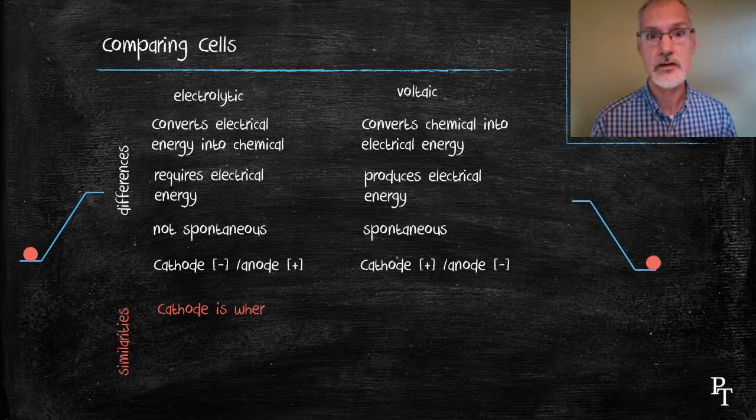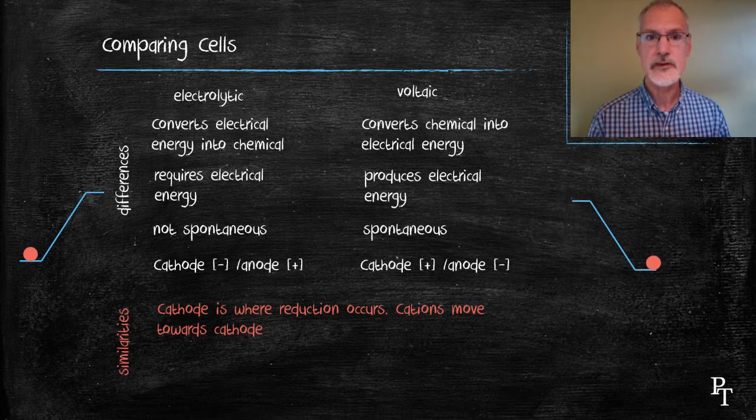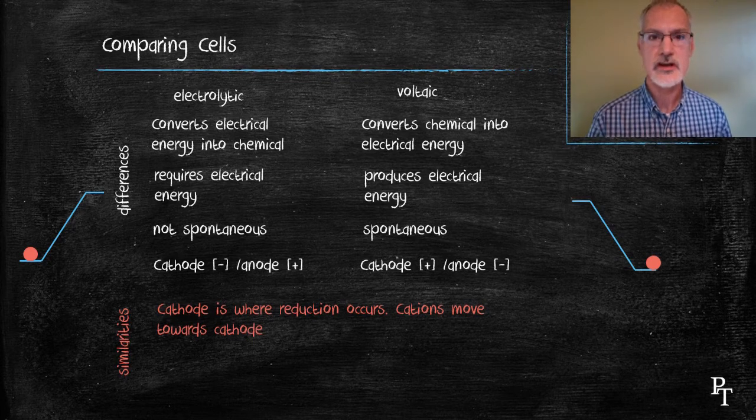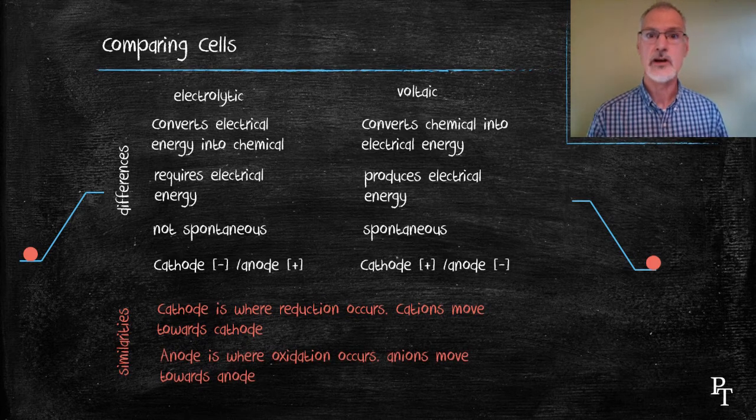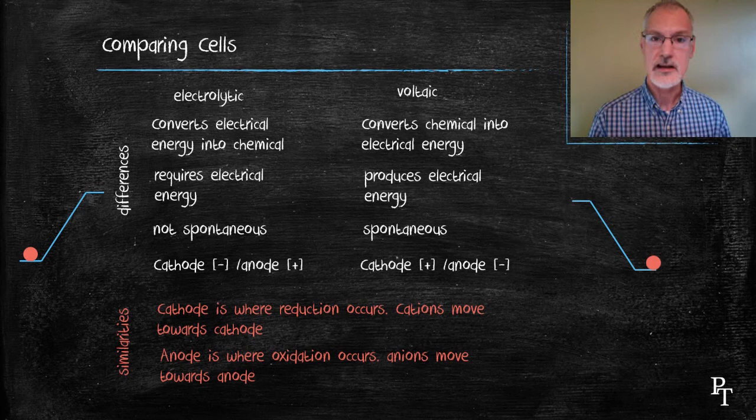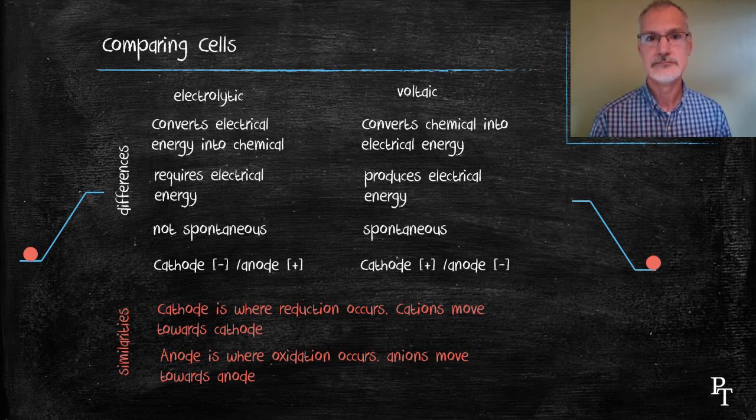Now, as far as the similarities go, we always have the cathode is where reduction occurs. And cations, whether they be present in the molten salt or whether the cation be present in the salt bridge, they both move towards the cathode. Similarly, our anode is where oxidation takes place. And anions, whether again in the salt bridge or in our molten electrolyte, will always move towards the anode. Thank you.